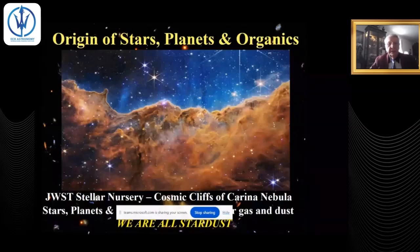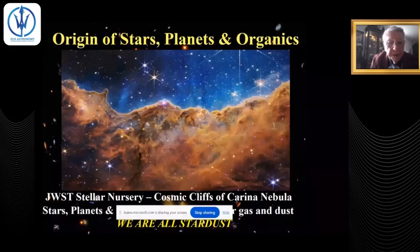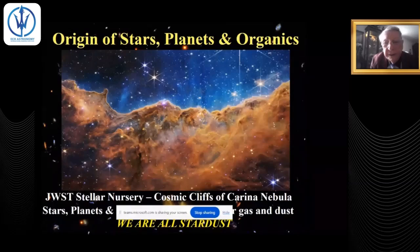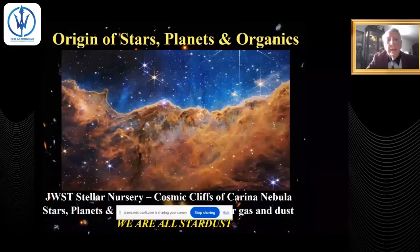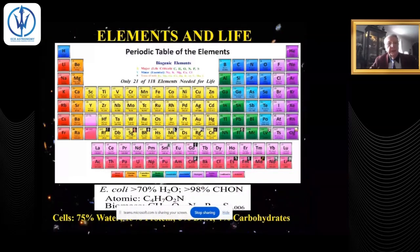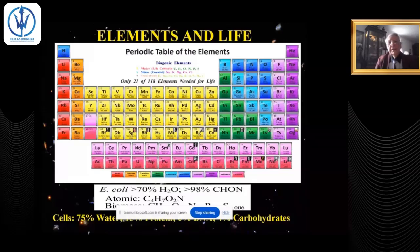The origin of stars, planets, and organics begins in cosmic space. This is a James Webb Space Telescope image of a stellar nursery — the cosmic cliffs of the Carina Nebula — showing the formation of stars and planets at the interface of interstellar dust. From the standpoint of elements, life is quite simple: you can write a chemical formula for life as C4 H7 O2 N1.